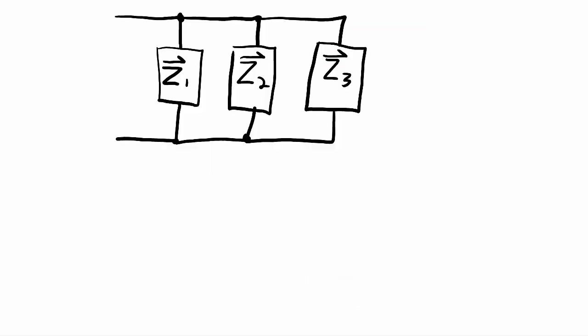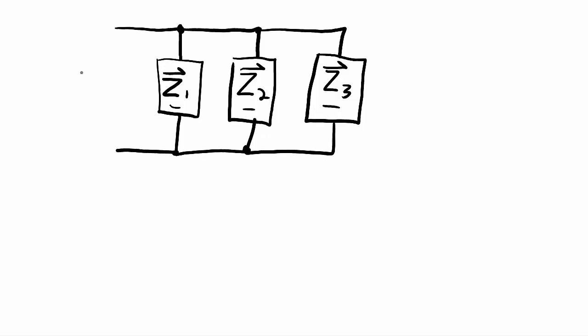I've redrawn the circuit here, and this circuit is showing three impedances Z1, Z2, and Z3, all in parallel, because again they're sharing the same top node and the same bottom node. And what I want to do is calculate the total impedance between those two points. Now Kirchhoff's voltage law and current law, as well as Ohm's law, are all going to apply in these parallel circuits.